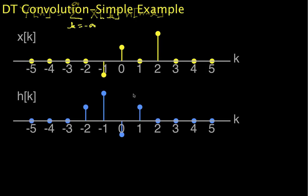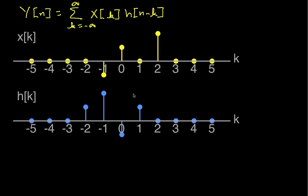Hello and welcome to this video in which we'll present the process of doing discrete time convolution through a simple example. This is a simple example because each of the waveforms involved is zero for most of its length and the waveforms are fairly simple and arbitrary, so we won't end up having to solve long or difficult summations. The goal here is to help you understand the concepts and the process, and then in subsequent videos we'll do much more complicated examples.